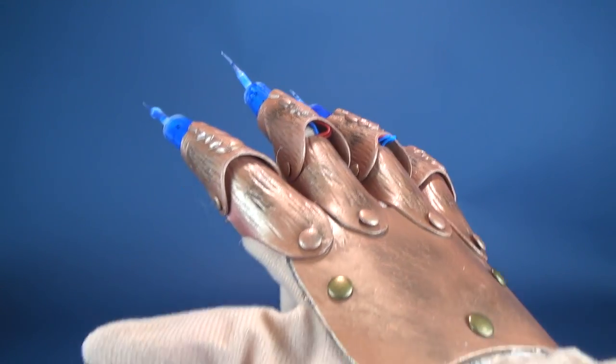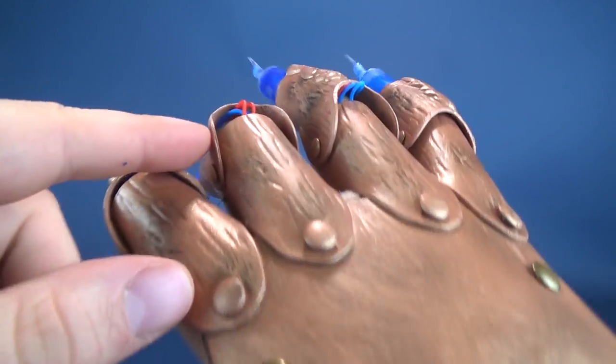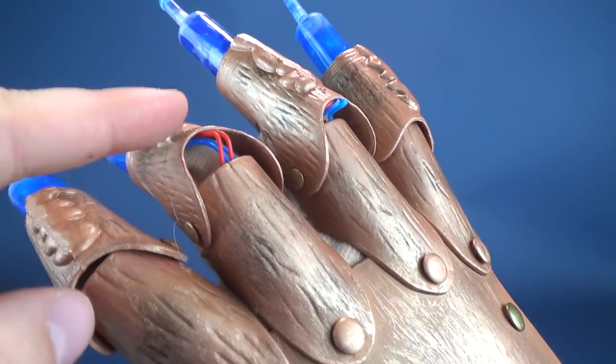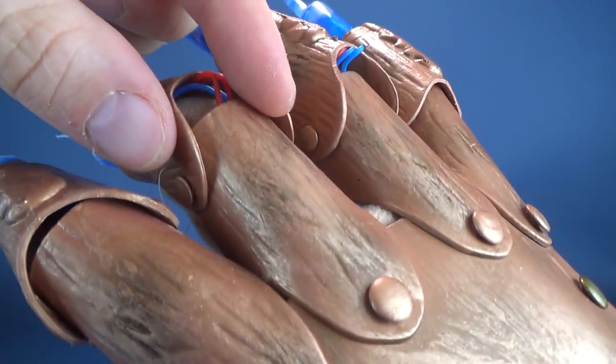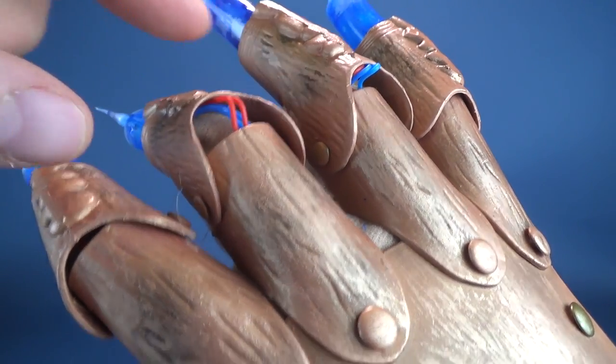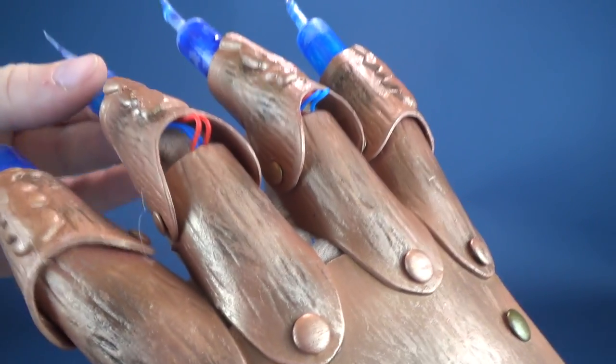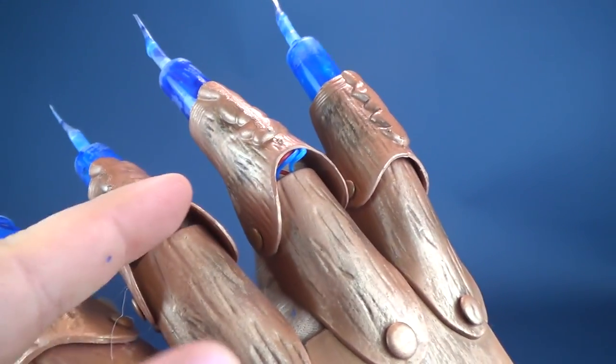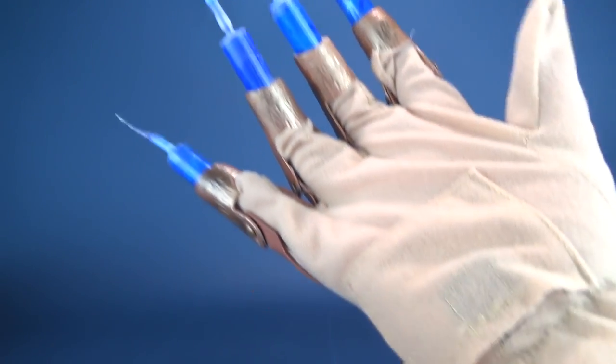The biggest problem that I do have though with it is that you have visible wires. There's wires that are running from the on and off switch through each of the individual fingers. They should have probably put these in something protective because if you're going to be moving your fingers back and forth, you're probably going to fray that wire. And the moment that happens, these will stop functioning.